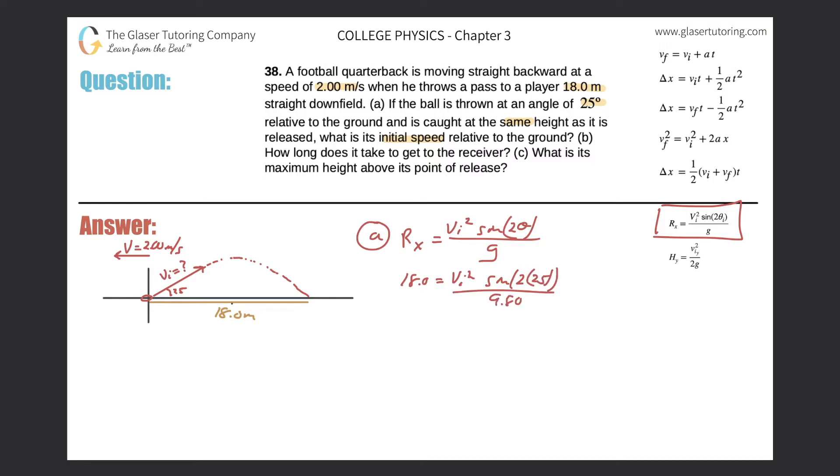So now let's just do a cross multiplication. So 18 times 9.8 is 176. So we get 176 is equal to VI squared times the sine. Well, let me just do that too. I'll just calculate sine of two times 25, which is really the sine of 50. So that works out to be 0.766. And then just divide out the 0.766 from both sides.